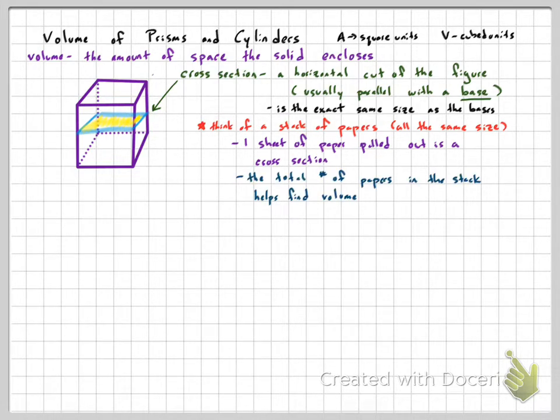So the total number of papers in the stack, think of that as the volume. So if you think of a stack of papers, however many papers are in the stack, that would represent volume, how many pieces of papers fit in that stack. So how do we find volume? It's actually really easy. Volume is much easier than surface area.